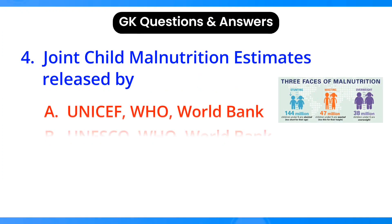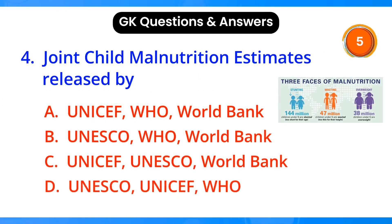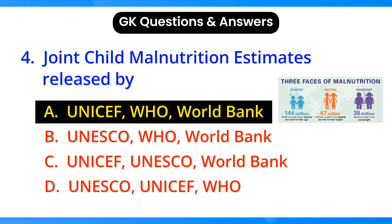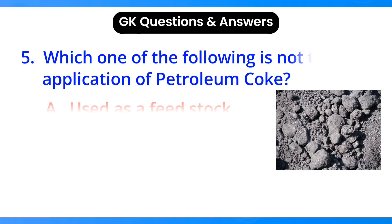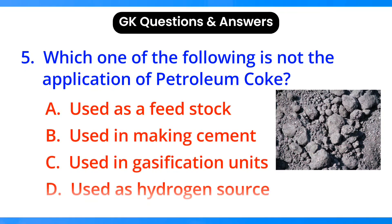Joint child malnutrition estimates were released by which organization? Answer: option A, UNICEF, WHO, and World Bank.